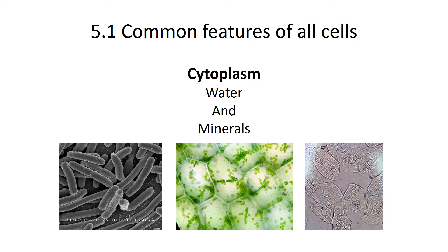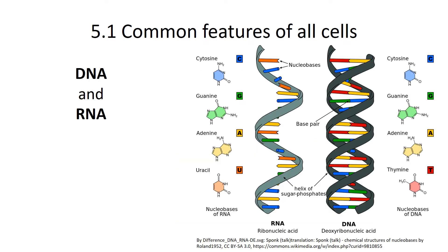Inside the phospholipid bilayer, or the cellular membrane, there is a cytoplasm — all cells have cytoplasm, and it's basically a source of water and minerals. All cells also contain DNA and RNA. DNA contains the information of life, and RNA is an intermediate involved with the making of proteins. RNA is a quite remarkable and versatile molecule, but all life has these two nucleic acids.